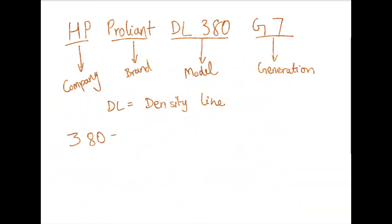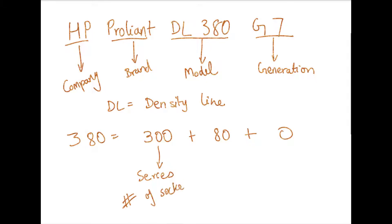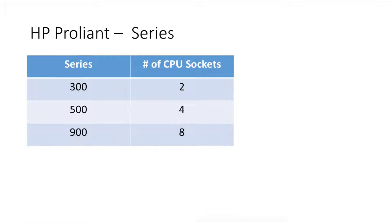Let's understand the number 380 by breaking it into three constituent parts: 300, 80, and 0. The 300 is the series, which indicates the number of processor sockets supported by the server. In the case of HPE Proliant, the 300 series supports up to two processor sockets, meaning you can have up to two physical CPUs on that server. Proliant also has a 500 series that can support up to four processor sockets and a 900 series supporting up to eight sockets.